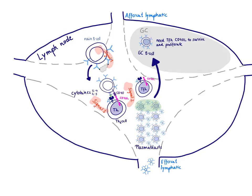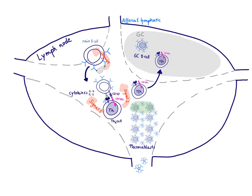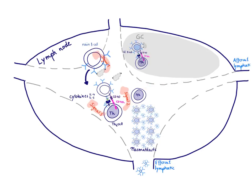The survival signal is provided by the T follicular helper cell in the form of CD40 ligand. To ensure this food is provided at the germinal center, the B-cells actually invite the T follicular helper cell to join. The germinal center B-cell knows that in order to get the CD40 ligand survival signal, it needs to present antigen via MHC class 2, be recognized by the T follicular helper cell, and then this protein-protein interaction can take place.